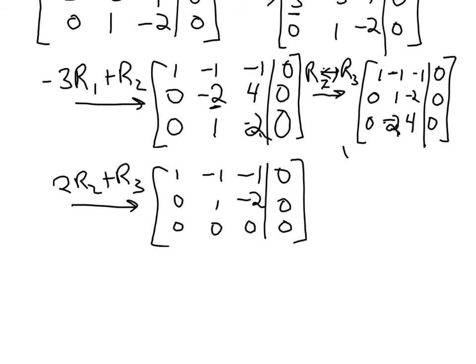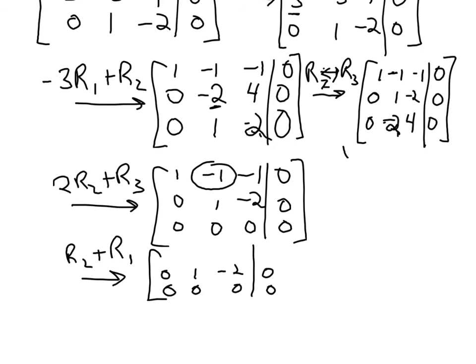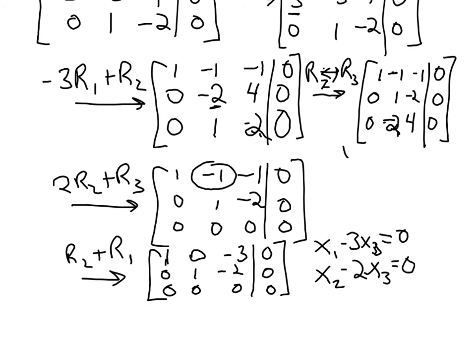We now know we're looking at a dependent system with infinitely many solutions. For dependent systems, I like to go all the way to reduced row echelon form. Doing row two plus row one eliminates the entry in the top-right of the upper portion. After that operation — zero plus one, one plus negative one, negative two plus negative one — we get our reduced form. From this, x1 minus three x3 equals zero and x2 minus two x3 equals zero.